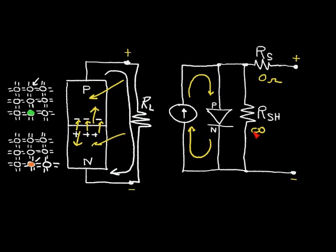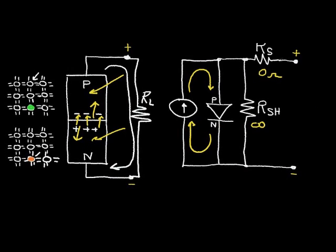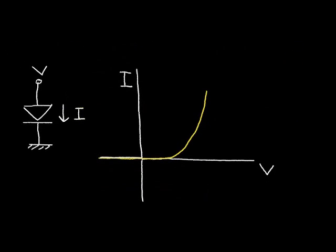Let's explore the current-voltage relationship of this solar cell. With no light shining on the diode, we can plot voltage on the horizontal axis and current I on the vertical axis. In the case of no light, there is a very small negative current, zero current where the curve crosses the axis, and then as voltage exceeds a certain threshold, a larger amount of current flows.